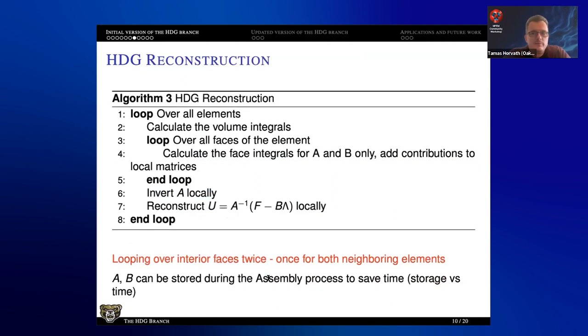And then there is another part of the HDG calculation, the reconstruction. So once you have the skeleton solution, you can get the volume unknowns. Then the loop looks very similar. Calculate the volume integrals, loop over the faces, calculate the face integrals. You only need two out of the four matrices for the reconstruction. Invert A locally and do the reconstruction again locally. So that's very quick. And I have the same red line here because same issue shows up that you are looping over the interior faces twice.